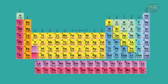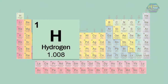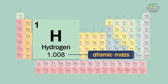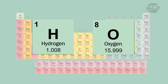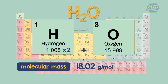Each element found in the periodic table has mass. This is known as atomic mass. When elements combine to form a compound, it has mass also. This is known as molecular mass. Molecular mass is simply the sum of atomic masses in a compound.